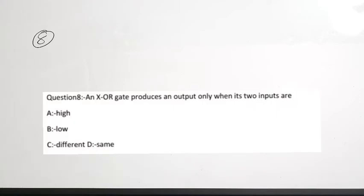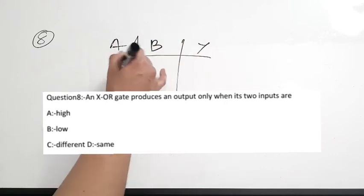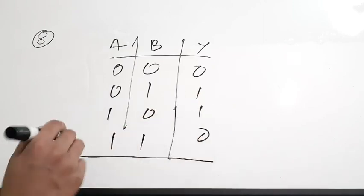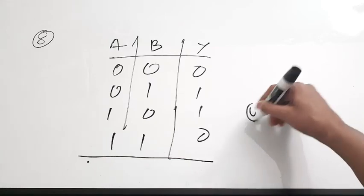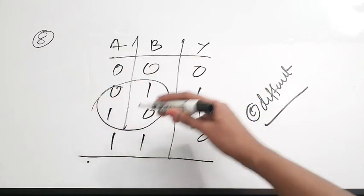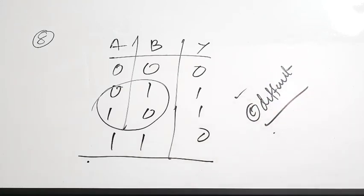The eighth question: an XOR gate produces an output when — this is connected with the truth table of an XOR gate. For inputs A and B: 0·0 → 0, 0·1 → 1, 1·0 → 1, 1·1 → 0. The output is 1 when both inputs are different. Correct answer is option C — different.